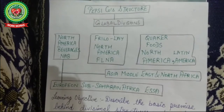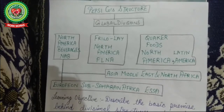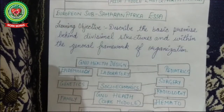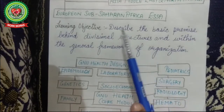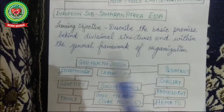The outcome of this example is: in a divisional structure your business is expanded worldwide. You have divisions of homogeneous products with differentiated features, and they are spread zone-wise and region-wise. The learning objective of divisional structure is to describe the basic premise behind divisional structures within the general framework of the organization.